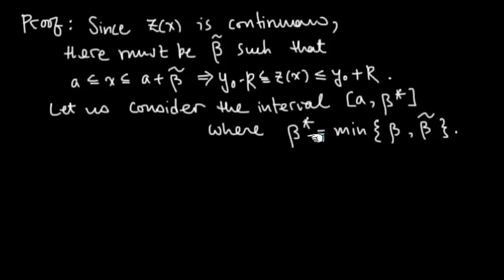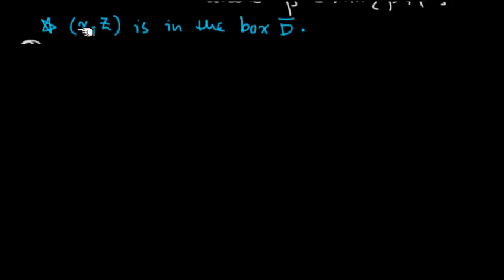If you choose even smaller than beta or beta tilde, which we call b star, whatever the smallest one, z's going to stay inside the box and yn's are going to stay in the box. This is our starting point. yn and z in the box, so we have control on the values and partial derivatives.